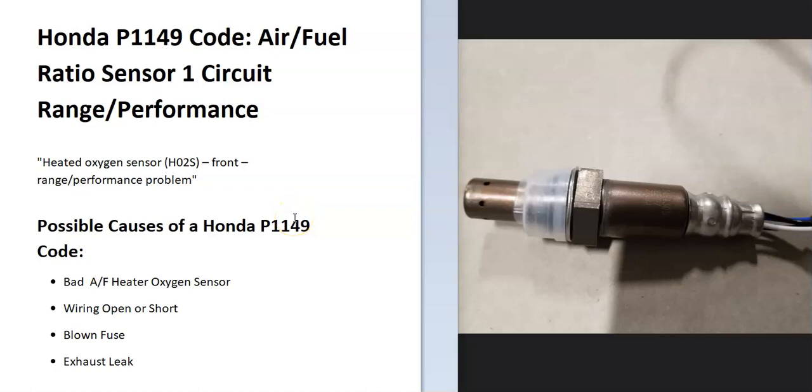Today I'm talking about a Honda with the P1149 code, what it is and how you go about fixing it. The P1149 code is an air fuel ratio sensor 1 circuit range performance issue.